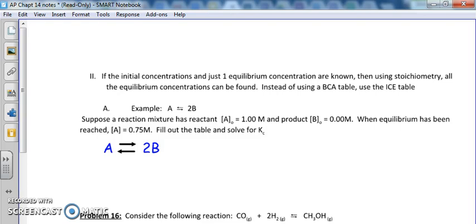So how is this problem different? Well, if I read this, the initial concentrations and just one equilibrium concentration are known. The problems before, I knew all the equilibrium concentrations. In this scenario, I know the initial and only one equilibrium concentration. I'm going to use the same stoichiometry, the same idea as a BCA table, and I can find the other equilibrium concentrations. But this is really important. Instead of using a BCA table, we're going to use something called the ICE table. The BCA table, write this down, we use moles and the reaction goes to completion. The ICE table is where you use molarity or pressures and it goes to equilibrium.